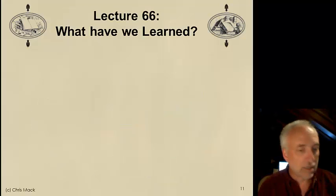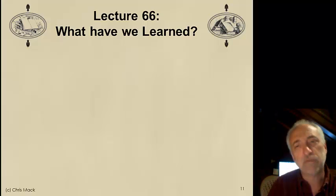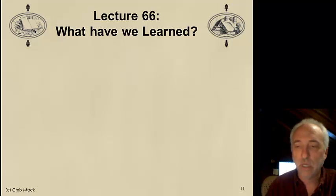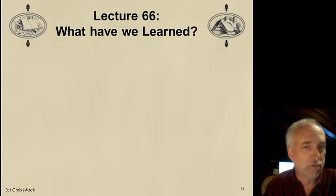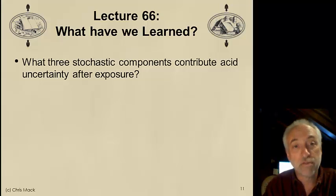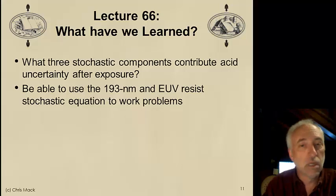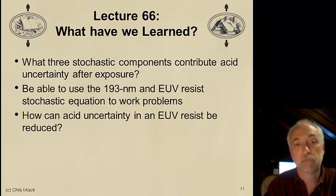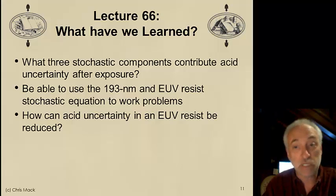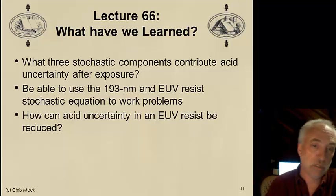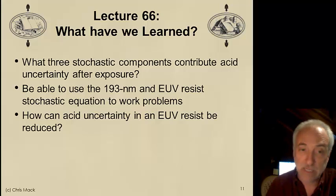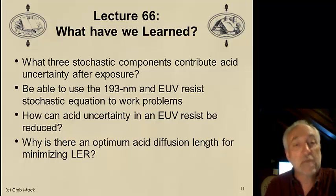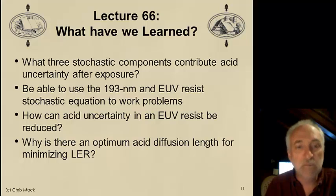We haven't quite finished everything to give a complete picture of LER, but we've gone further: we now understand uncertainties in terms of reaction diffusion as well as exposure. Here's what we've learned: three stochastic components contributing to acid uncertainty after exposure; using the 193 nm and EUV resist stochastic equations to work problems; four ways to reduce acid uncertainty in an EUV resist; and why there is an optimum acid diffusion length that minimizes the LER.